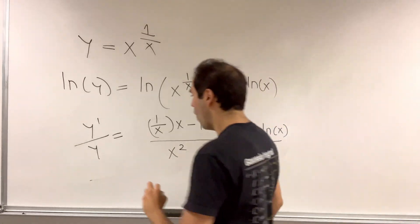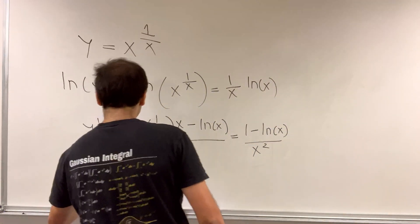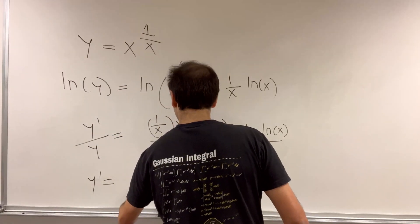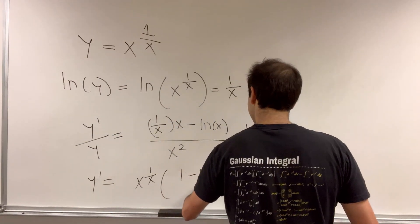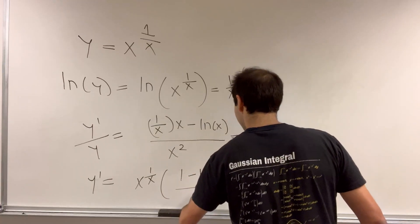Therefore, y prime is just y, which is x to the 1 over x, times 1 minus ln of x over x squared.